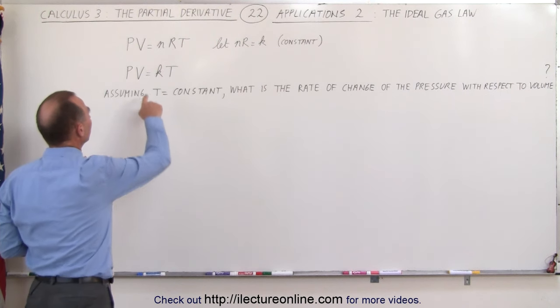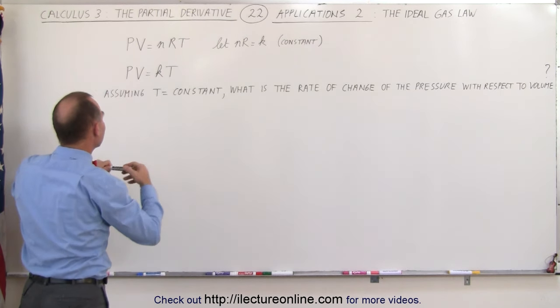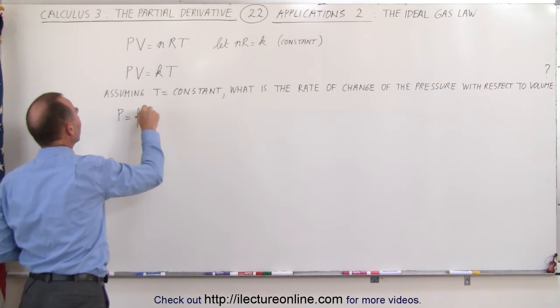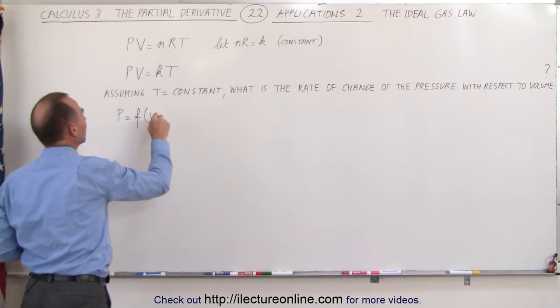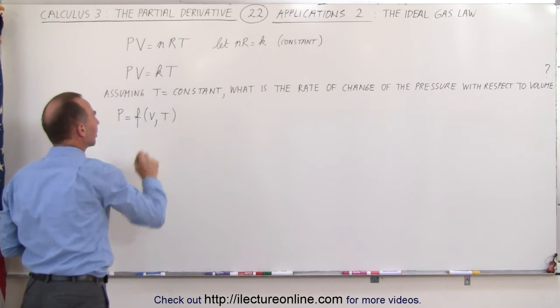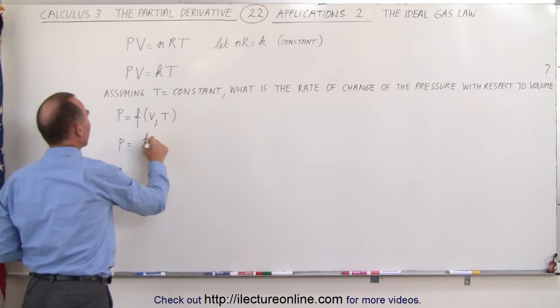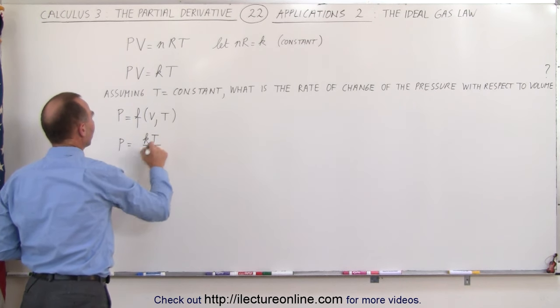The way to do that is to then write P as a function of V and T. So what we're going to do here is P is now going to become a function of the variable V, the volume, and the variable T, the constant. And so this can now be written P is equal to KT over V.